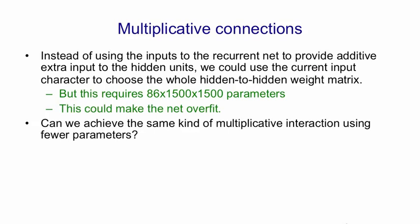So the question is, can we achieve this kind of multiplicative interaction where the character determines the hidden to hidden weight matrix using many fewer parameters, by making use of the fact that characters have things in common. For example, all of the digits are all quite similar to each other in the way in which they make the hidden state evolve.